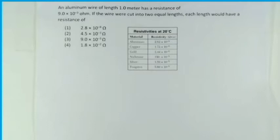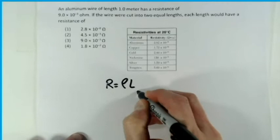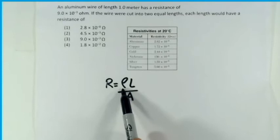Let's do a few sample problems. Here we have an aluminum wire of length one meter which has a resistance of 9 × 10⁻³ ohms. If the wire were cut into two equal lengths, each length would have a resistance of — four choices given. Let's look at the equation: R = ρL/A.